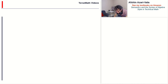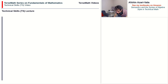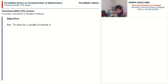Hello everyone and welcome to the videos on formulas, with this being the first one in the series. This is a technical skills video on the topic of solving for a variable of interest. We are going to talk about steps that we can take to solve for a variable of interest in a formula if it appears only once throughout the formula.